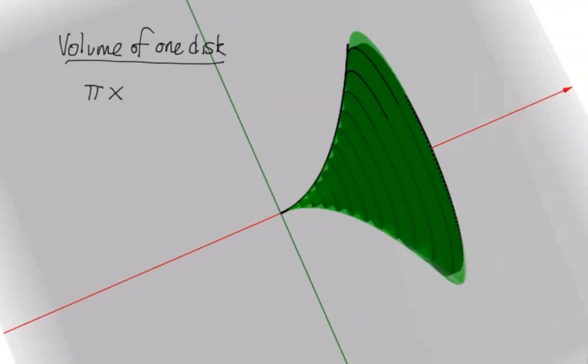Once you write the volume of one disc in complete generality, meaning only using variables, then you're able to write down a formula for the volumes of all those insanely thin discs with virtually no extra work.